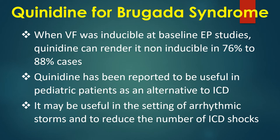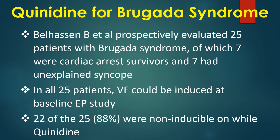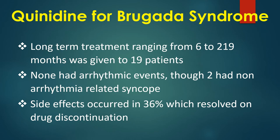Quinidine has been reported to be useful in pediatric patients as an alternative to ICD. It may be useful in the setting of arrhythmic storms and to reduce the number of ICD shocks. Belhassen and associates prospectively evaluated 25 patients with Brugada syndrome, of which 7 were cardiac arrest survivors and 7 had unexplained syncope. In all 25 patients, VF could be induced at baseline EP study; 22 of the 25 were non-inducible while on quinidine. Long-term treatment ranging from 6 months to 219 months was given to 19 patients, with none having arrhythmic events, though 2 had non-arrhythmia related syncope.